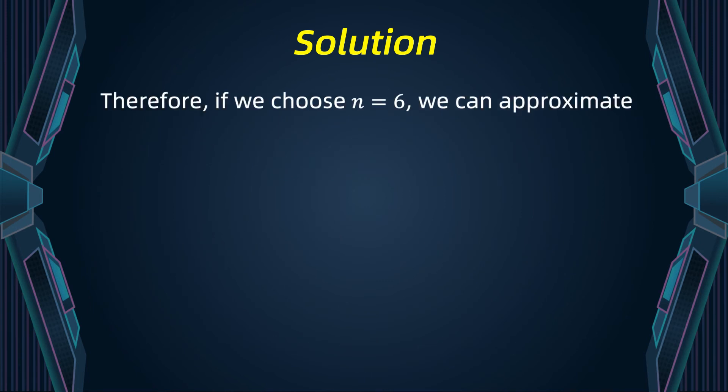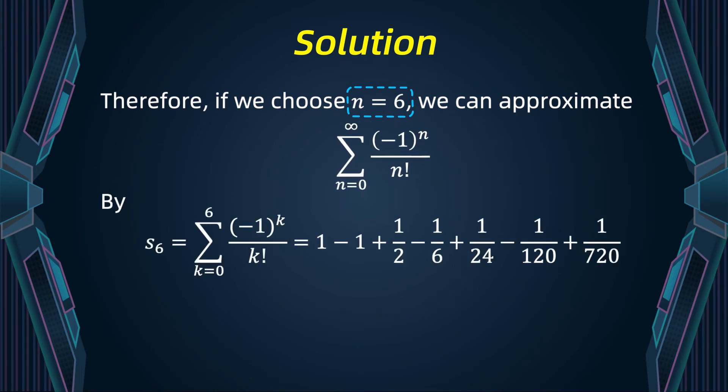Therefore, if we choose n equals to six, we can approximate our series by the partial sum s6. s6 is approximately 0.368056. This approximation has an error less than 0.0002. As you can see, this is correct to three decimal places.